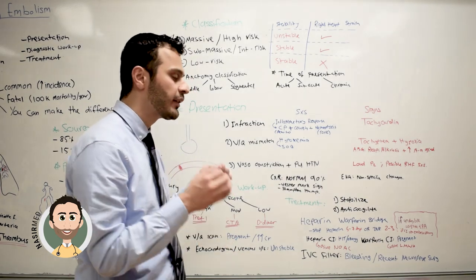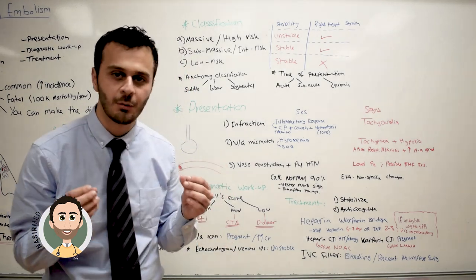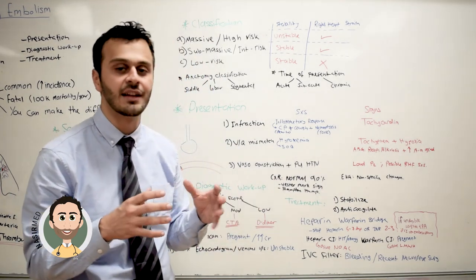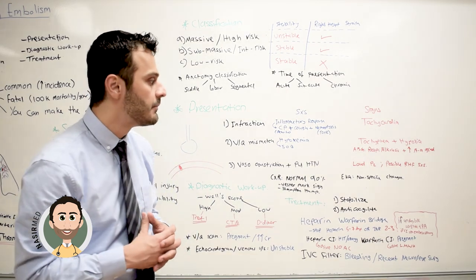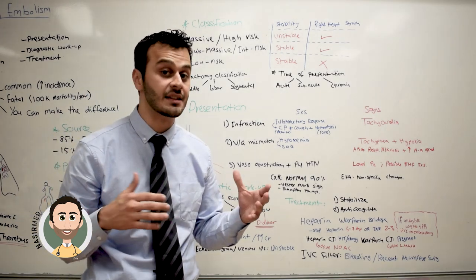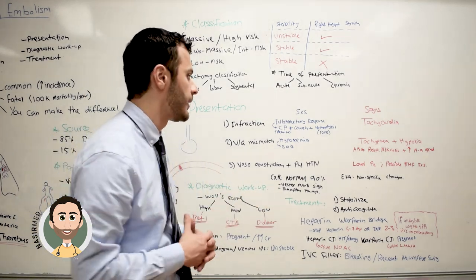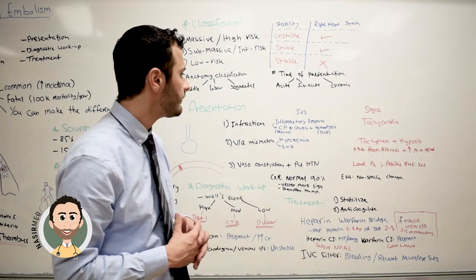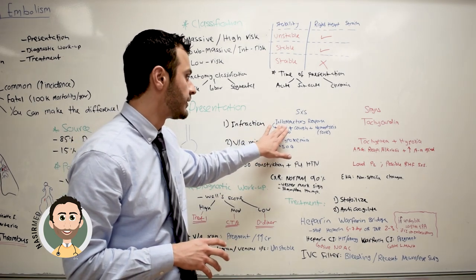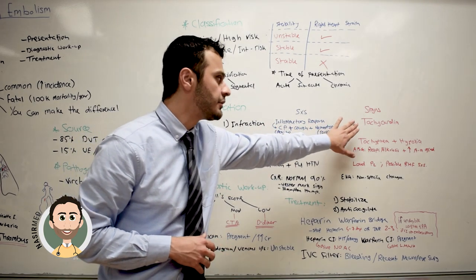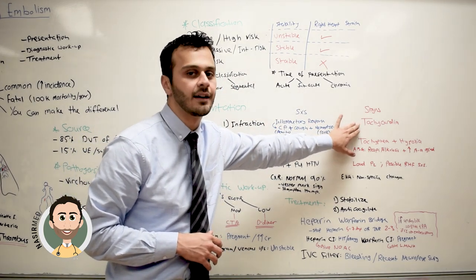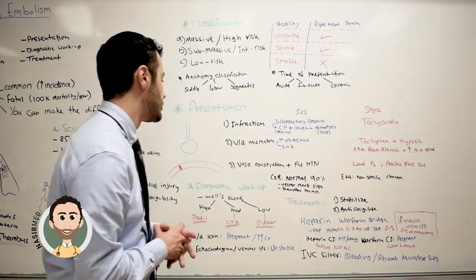However, lung tissue is one of the tissues that rarely gets severely infarcted, mainly because it has a dual blood supply. Because of the inflammatory response, the patient will also come with tachycardia upon presentation.